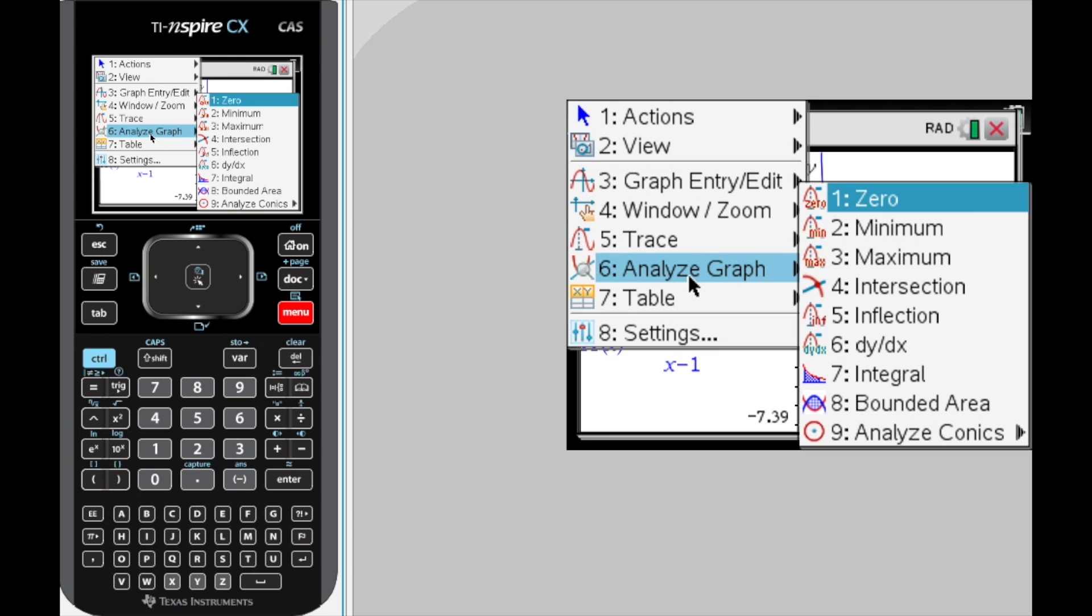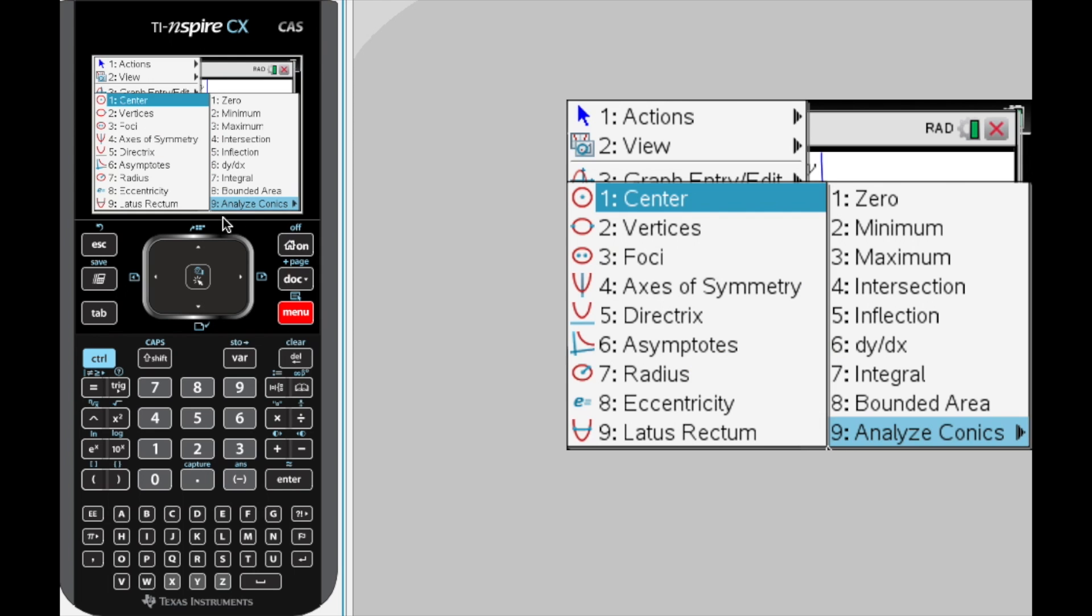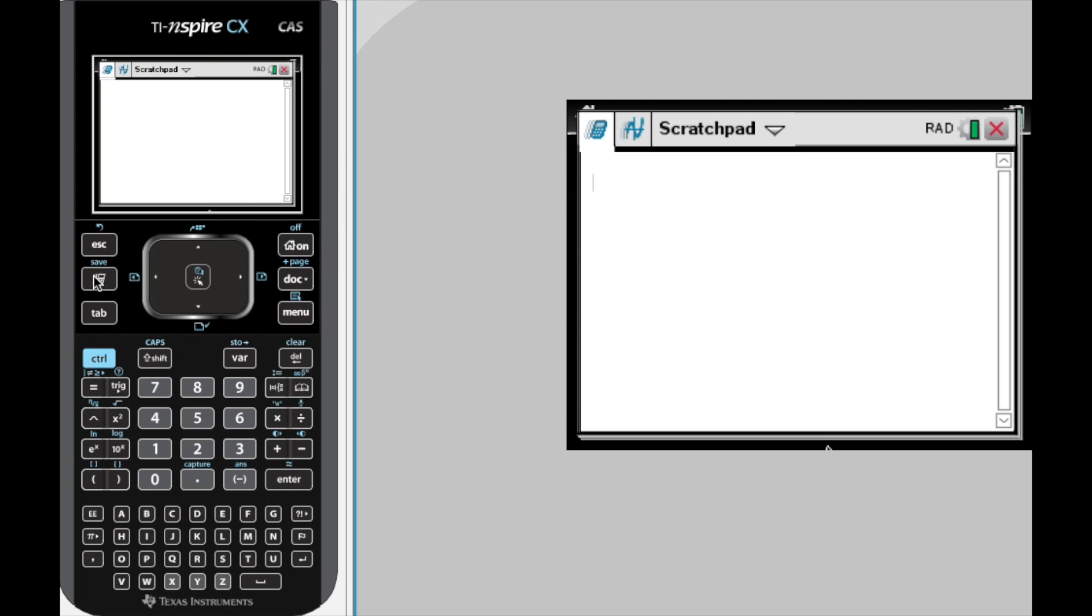Go to menu, analyze graph. Now, of course, if this is an 83 or 84, hopefully you know this by now or at the end of the year, you can hit second and then choose that calculation button underneath the graph on the screen.